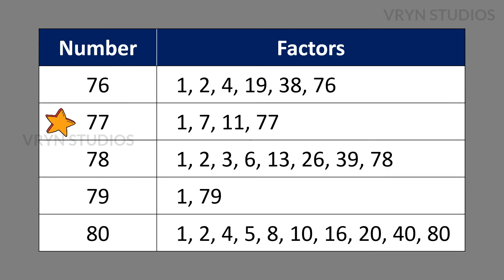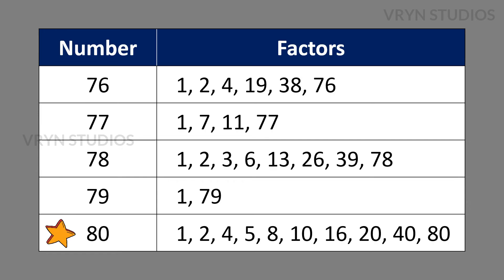The factors for the number 77 is 1, 7, 11 and 77. The factors for the number 78 is 1, 2, 3, 6, 13, 26, 39 and 78. The factors for the number 79 is 1 and 79. The factors for the number 80 is 1, 2, 4, 5, 8, 10, 16, 20, 40 and 80.